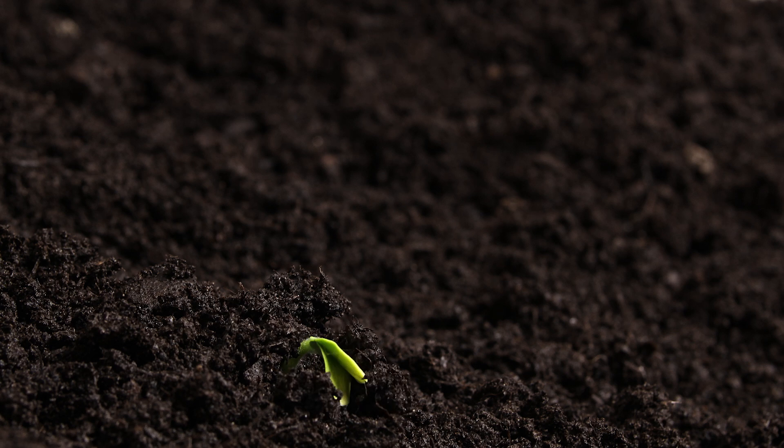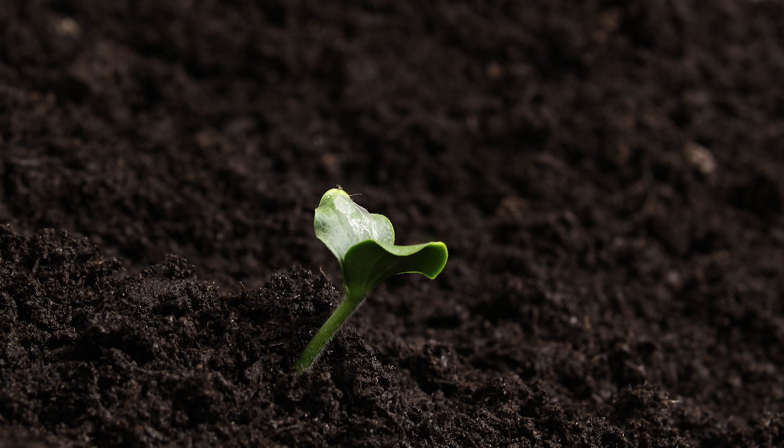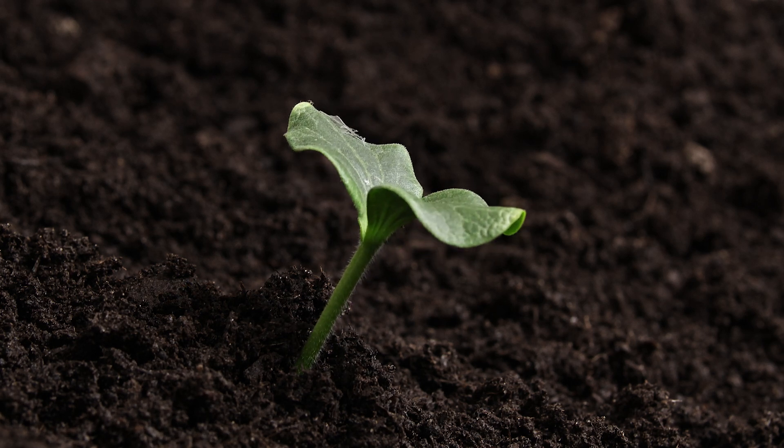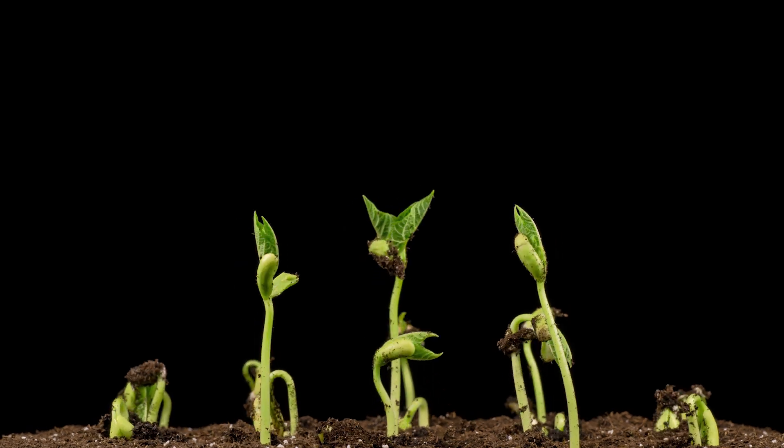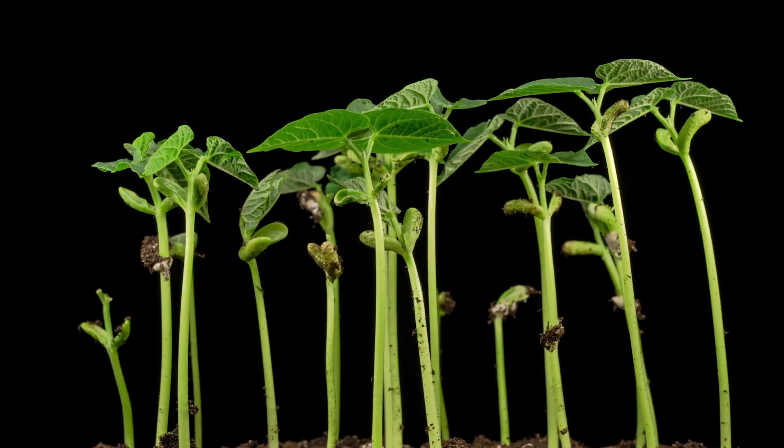This is an exciting moment, as the tiny plant is now on its way to becoming self-sufficient. Soon, small leaves begin to unfold and grow. These leaves are like solar panels, capturing sunlight and using it to make food through a process called photosynthesis.